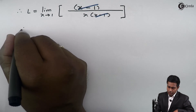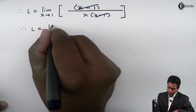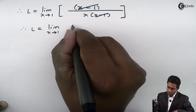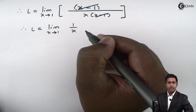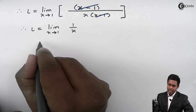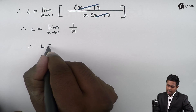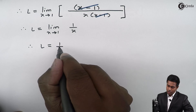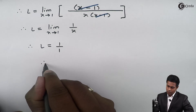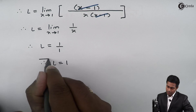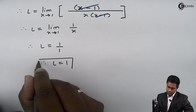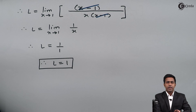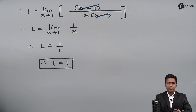After cancelling, we get L as the limit as x tends to 1 of 1 upon x. Here I can again apply the direct method. By direct method, substituting x equals 1, we get 1 upon 1 equals 1. Therefore L equals 1, and this is the value of the given limit. Thank you.